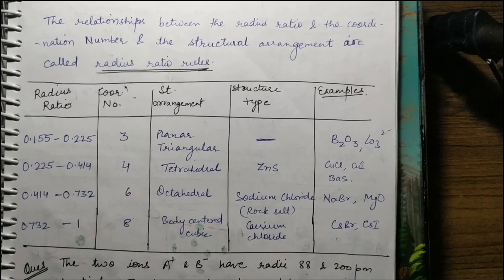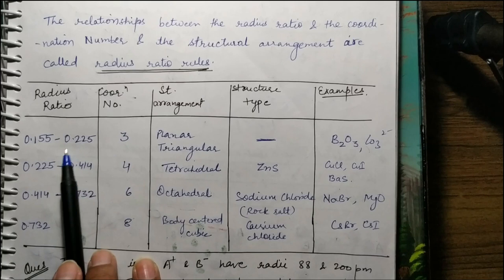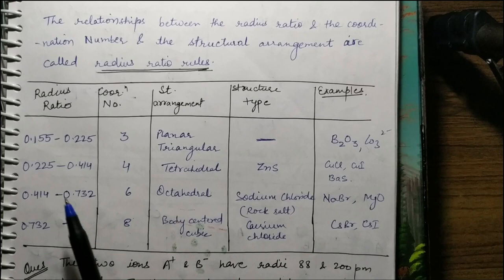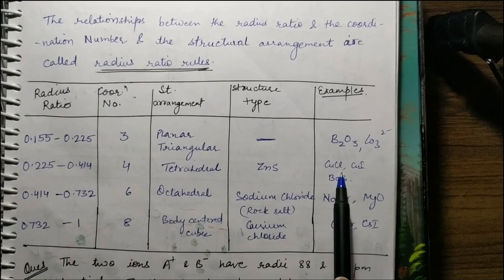Then we studied the radius ratio rule. The radius ratio is: radius of cation divided by radius of anion. Using this ratio and the coordination number, we know the geometry of the cation. In tabular form: radius ratio 0.115 to 0.225 gives coordination number 3 with triangular arrangement — for example B₂O₃ and carbonate ion. Between 0.225 and 0.414 gives coordination number 4 with tetrahedral arrangement — for example ZnS, copper chloride, and copper iodide.